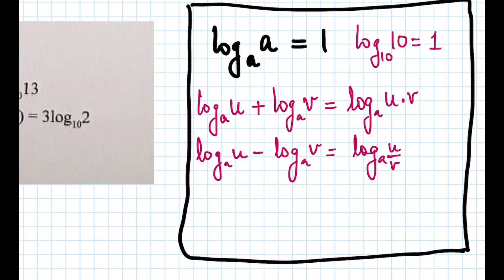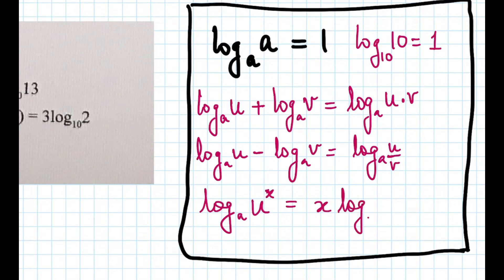Another rule we are going to use in this problem is: log base a of u to the power of any number x becomes x times log base a of u. So the power comes to the front, and if something is times a log, that becomes the power — it can go either way.